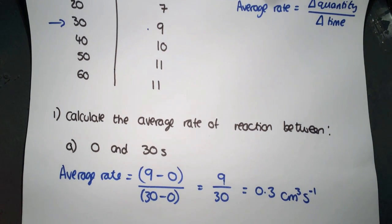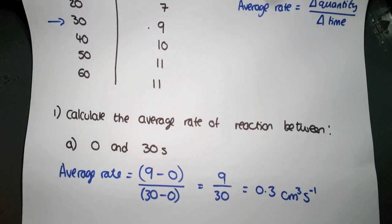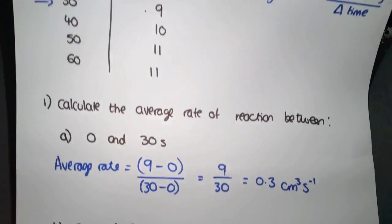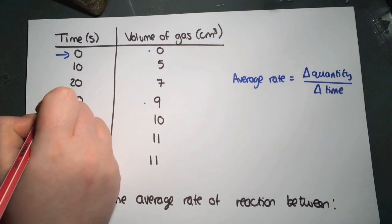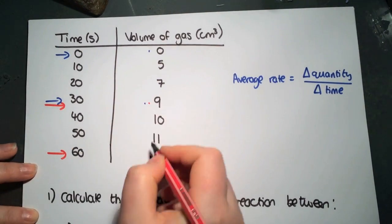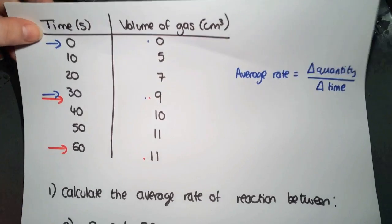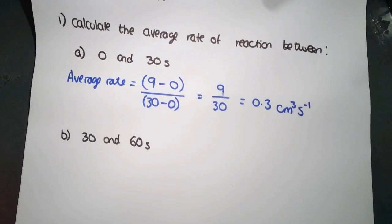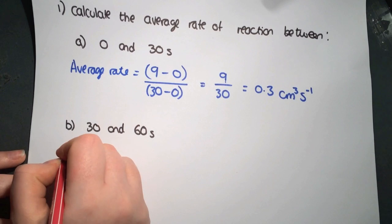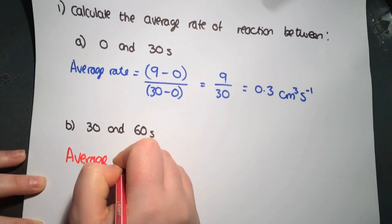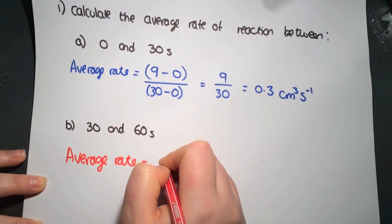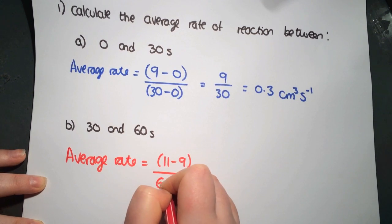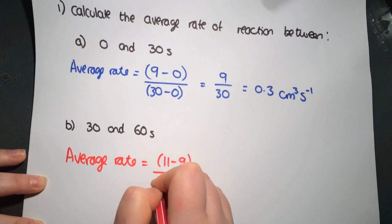For the next example, it's asking you for a time period that does not start at 0. It's asking you for between 30 and 60 seconds. So we're looking here at 30 and 60. So our change in quantity is going to be 11 minus 9. And your change in time is 60 minus 30.